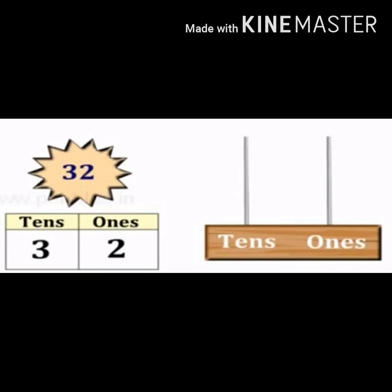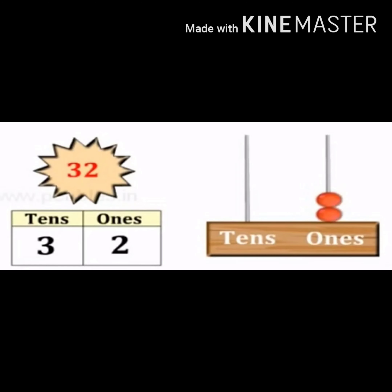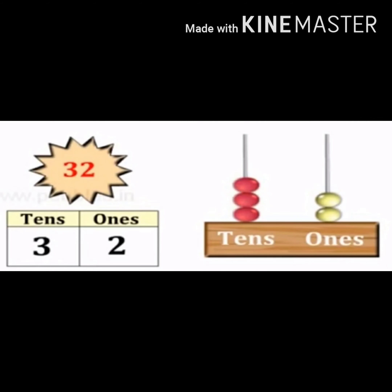Firstly, we will draw beads in the ones place. How many ones are there? There are two ones, so we have to draw two beads in the ones place. Now check the tens place — how many tens are there? There are three tens, so we have to draw three beads in the tens place.